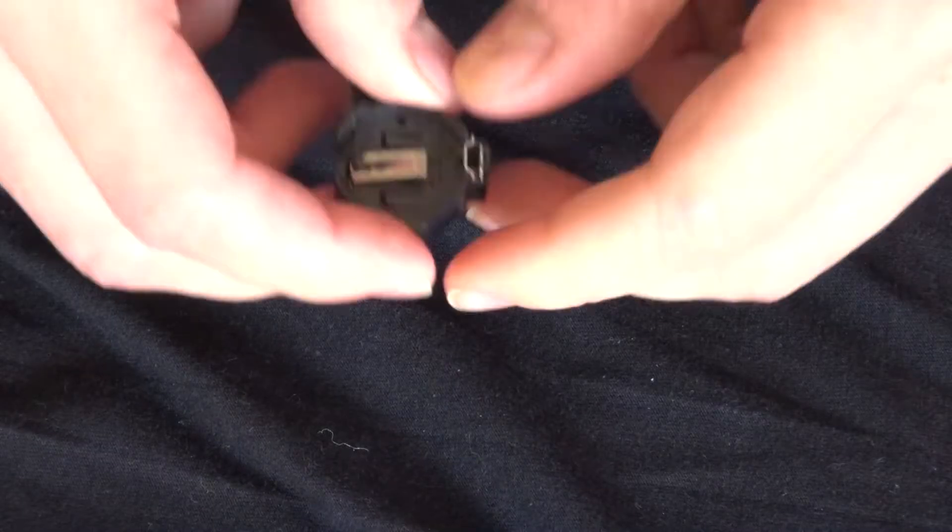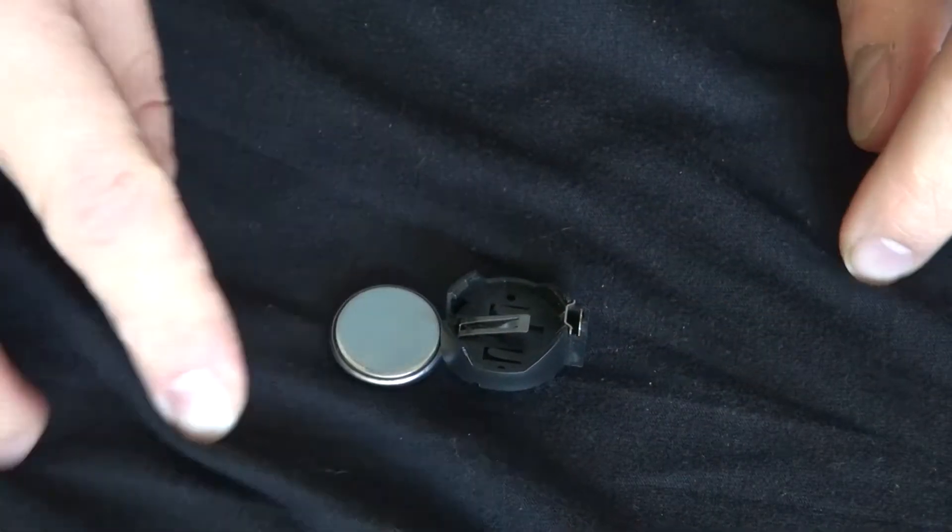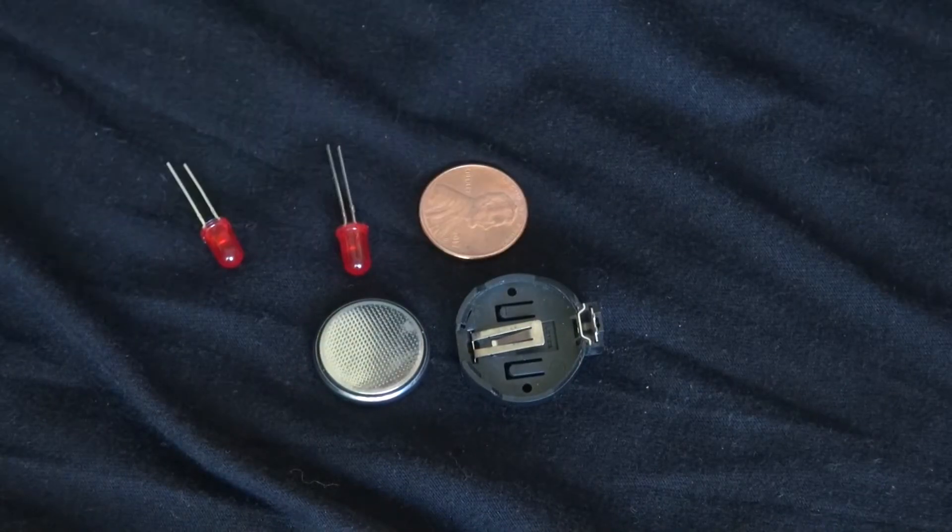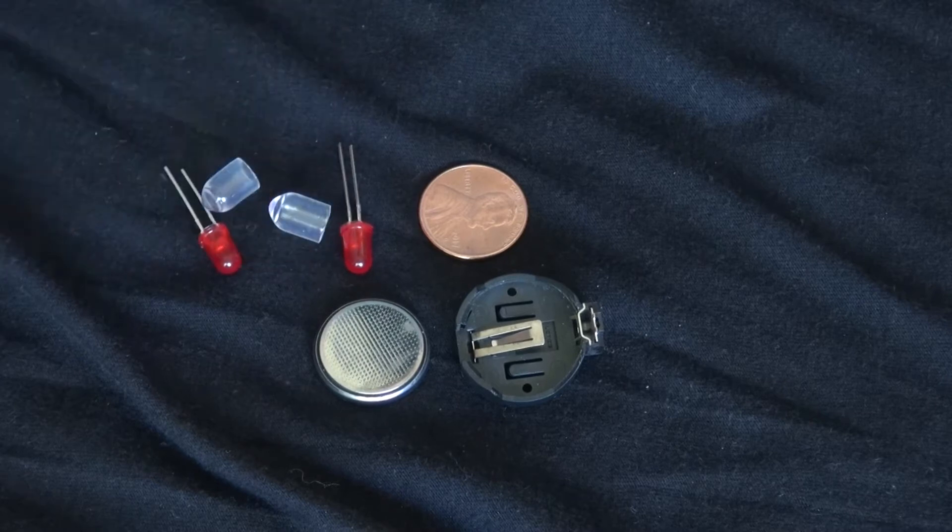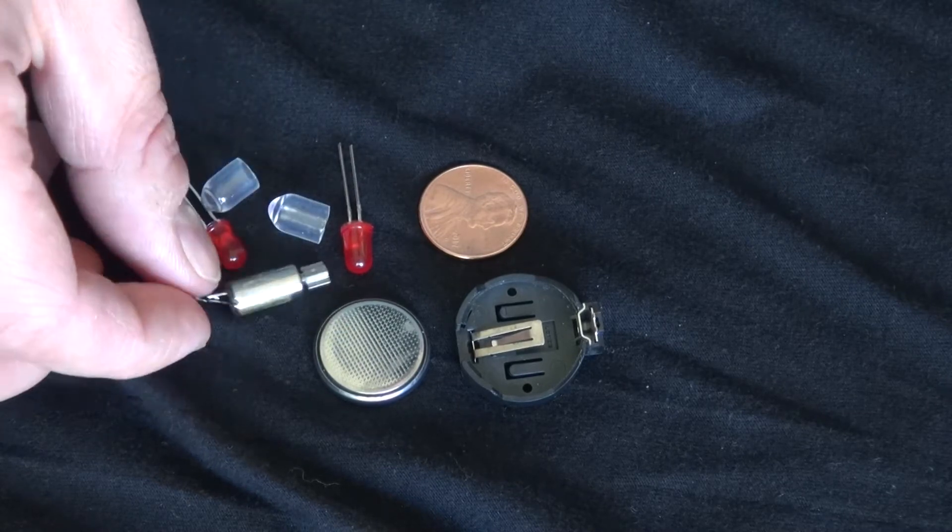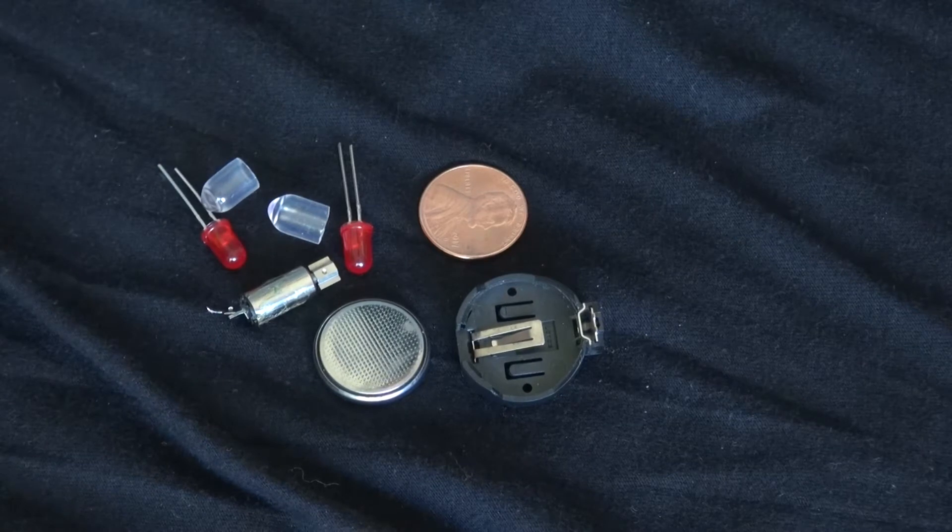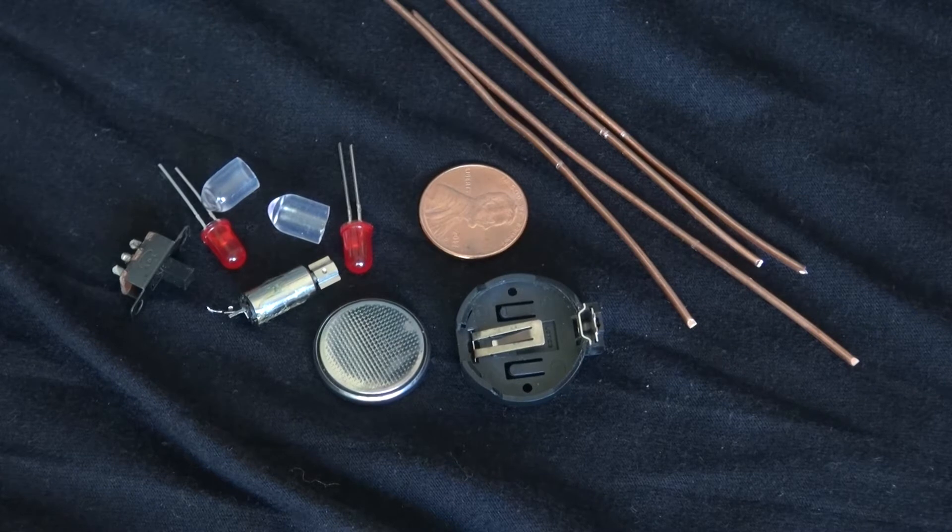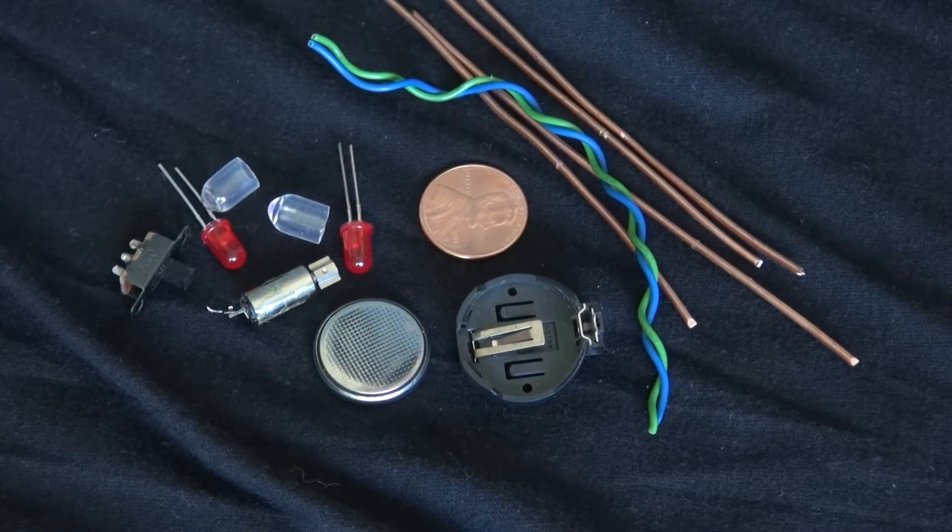So these are the components that you're going to need. You're going to need a battery cell holder, two red LEDs, a clean penny, two caps to put over the LEDs to amplify the light a little bit better, a DC motor that vibrates, a single pole single throw switch, some thick gauge wire, and some regular wire.